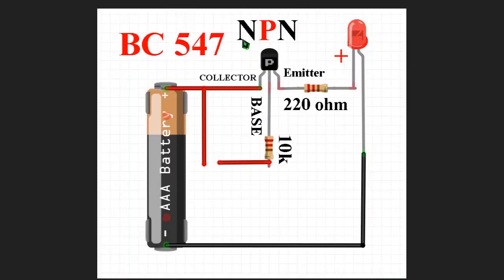This is the circuit diagram of the NPN transistor. The model number of the NPN transistor is BC547. The first pin is collector, the second pin is base, and the last pin is emitter. To protect the base current we use a 10k resistor, and to limit the LED current we use a 220 ohm resistor.